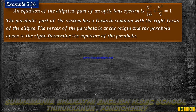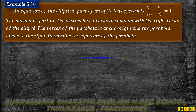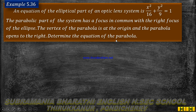Chapter 5. Example 5.36. An equation of the elliptical part of an optic lens system is x squared divided by 16 plus y squared divided by 9 equal to 1. The parabolic part of the system has a focus in common with the right focus of the ellipse. The vertex of the parabola is at the origin and the parabola opens to the right. Determine the equation of the parabola.